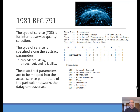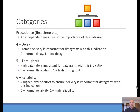Bits 6 and 7 of the type of service field are must-be-zero fields. Looking at the DTR bits in more detail: the delay bit (bit 3) — if set to 0 it's normal, if set to 1 it means low delay. The throughput bit — 0 is normal throughput, 1 means high throughput. Reliability — 0 is normal, 1 means high reliability traffic. Those are the values you would set in those bits of the IP traffic header.